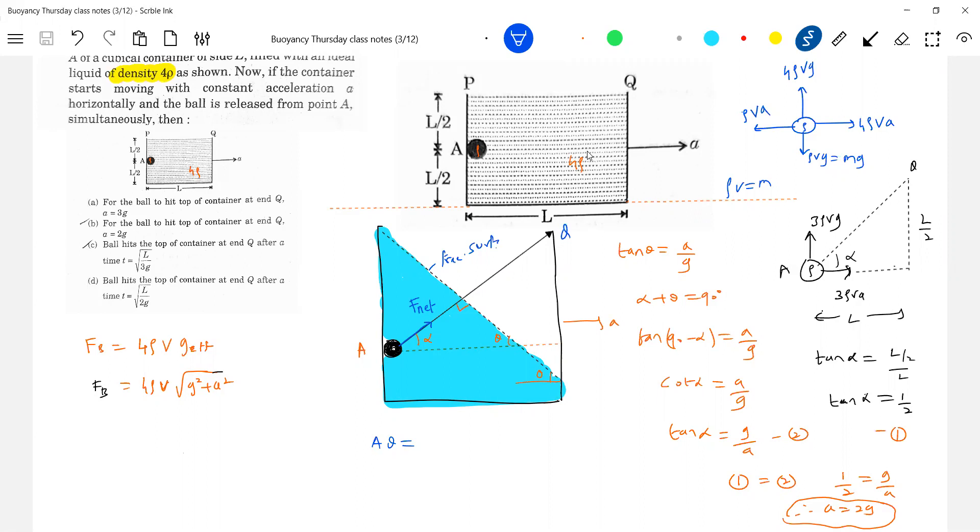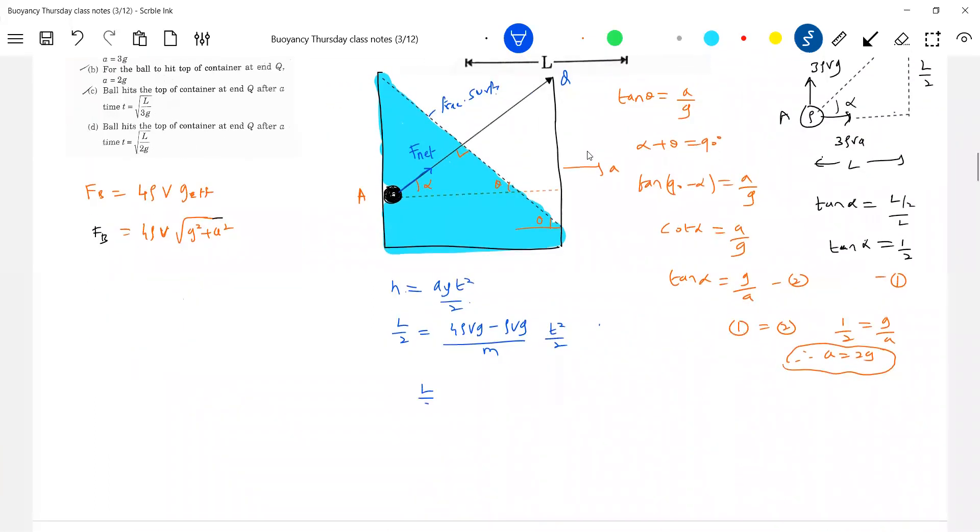You can just take help of this particular thing. So what is the resultant? So how much of height it has to ascend? h is equal to a_y t square by 2. What is h? L by 2. What is the acceleration along y axis? Acceleration along y axis should be 4 rho v g minus rho v g by m, t square by 2. So how much will get it? What is m? m is rho v. So solving this we will end up with equation l by 2 is equal to 3 g by 2, 2 in a way gets eliminated. t square. So t is equal to how much? l by 3 g.